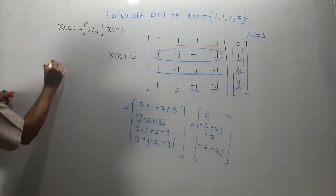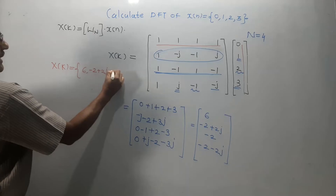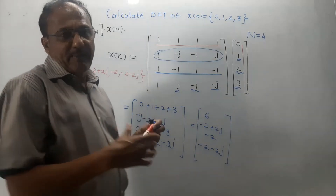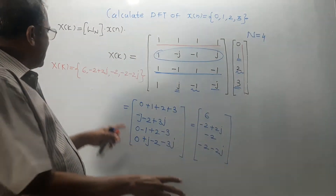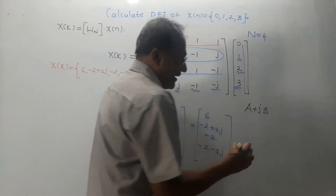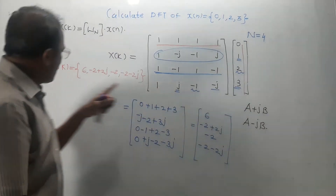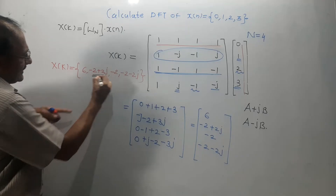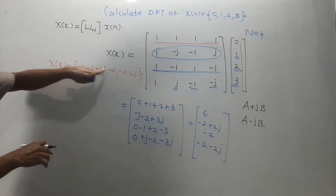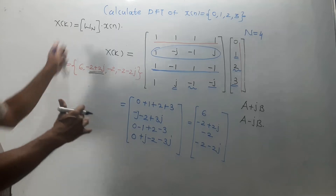The final answer is written as a sequence: X of K equals 6, minus 2 plus 2j, minus 2, minus 2 minus 2j. This is the answer of DFT. One very important concept: to cross-check the answer, if you are getting a complex term like A plus or minus jB, then in the same answer you should also have the term A minus jB. For example, the second term is minus 2 plus 2j, and the last term is minus 2 minus 2j — then and only then is your answer correct. This is the way to calculate 4-point DFT.